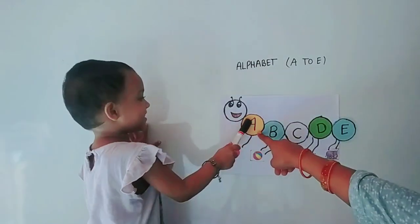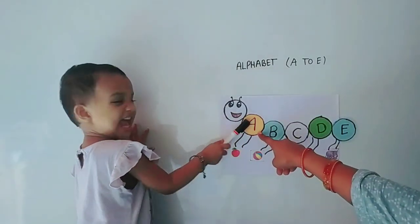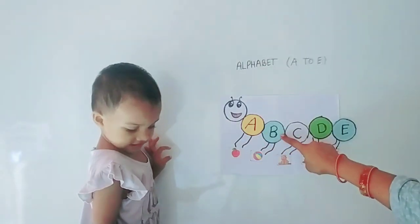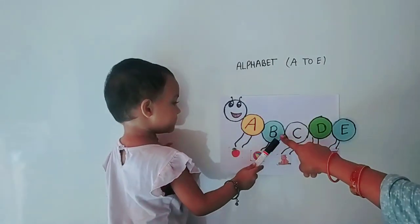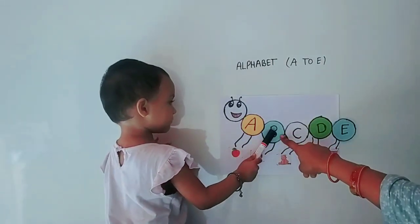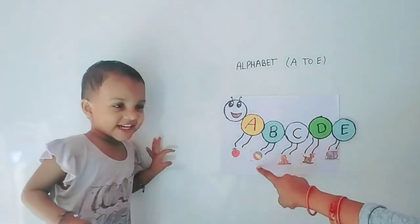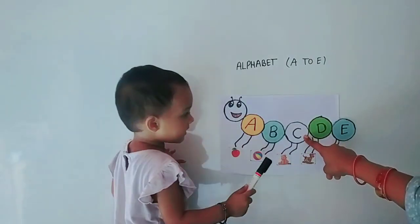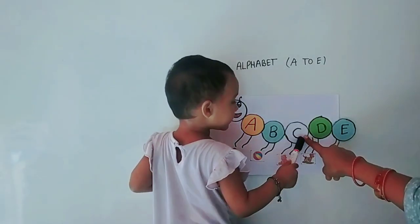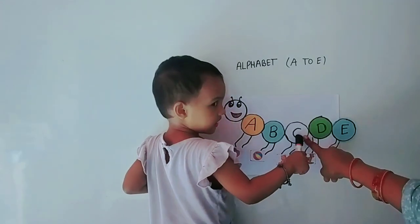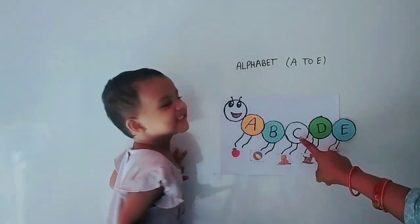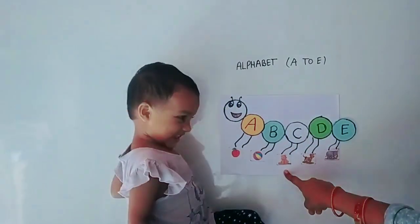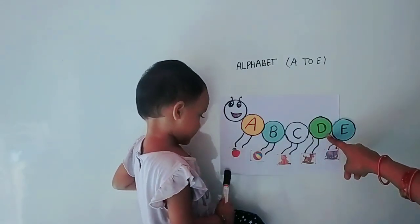Which letter is this? A for Apple. Which letter is this? B for... Which letter is this? C, C for Cat.